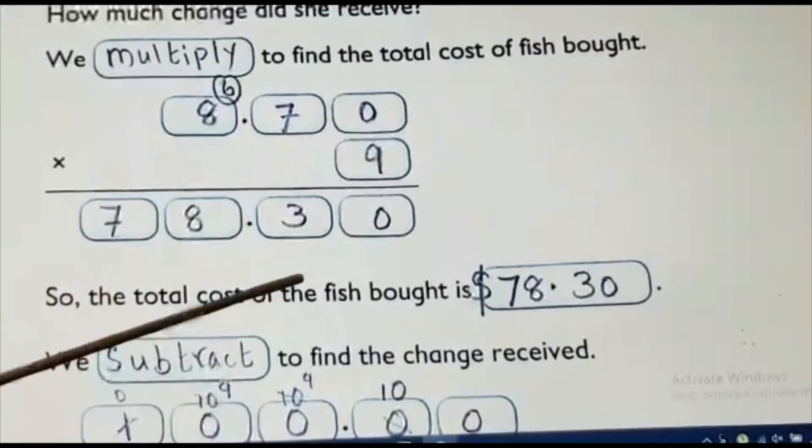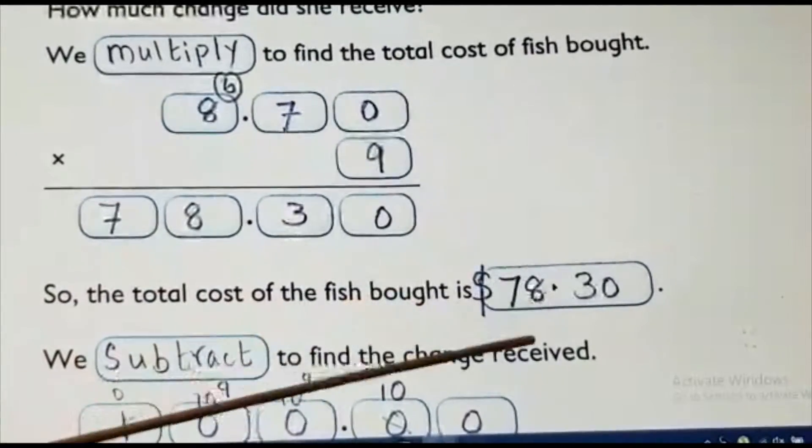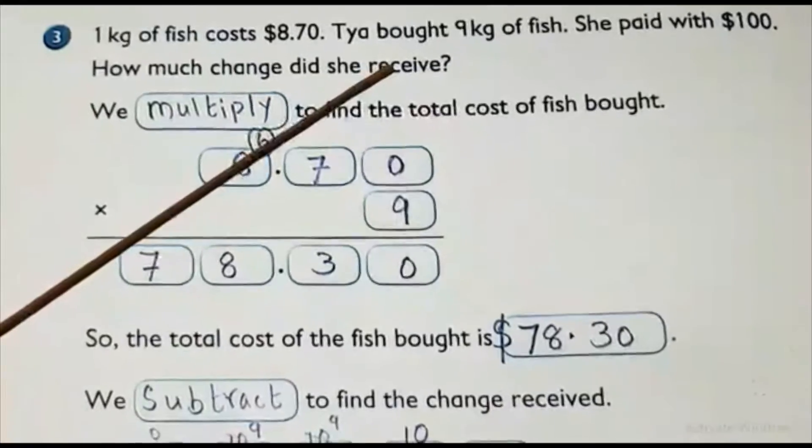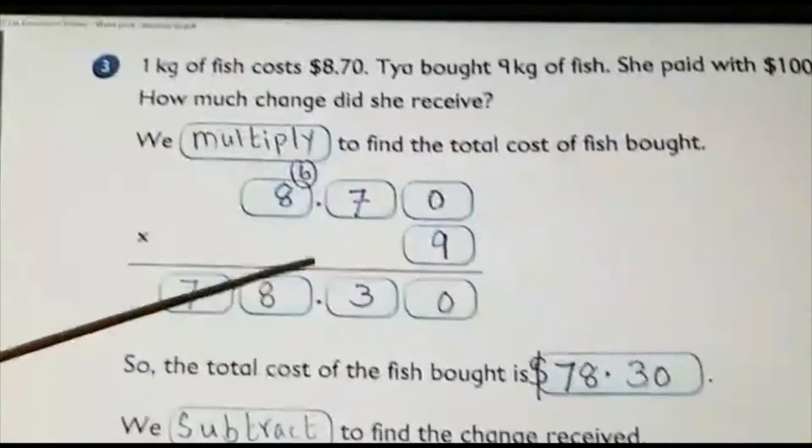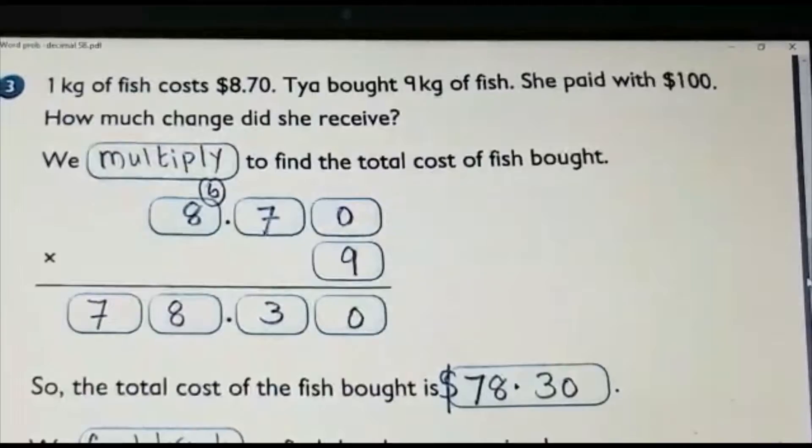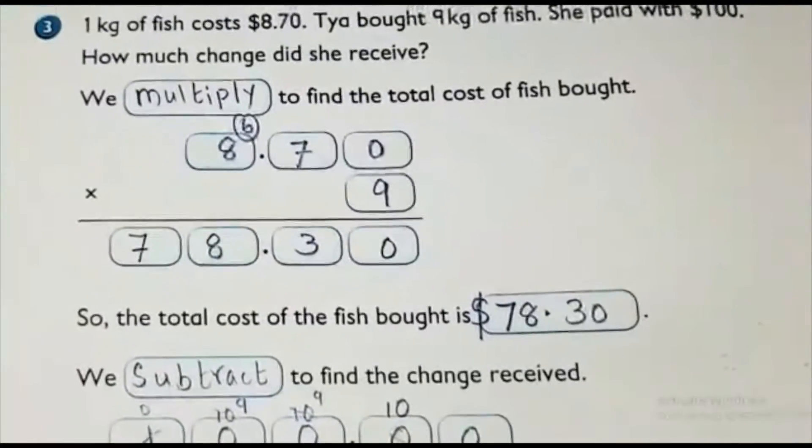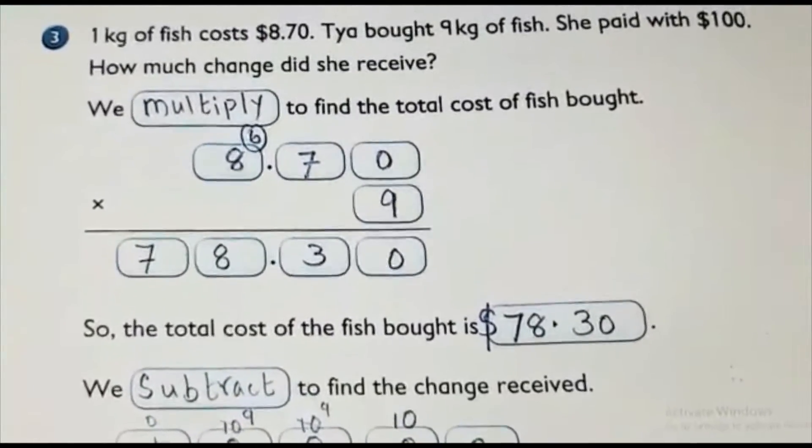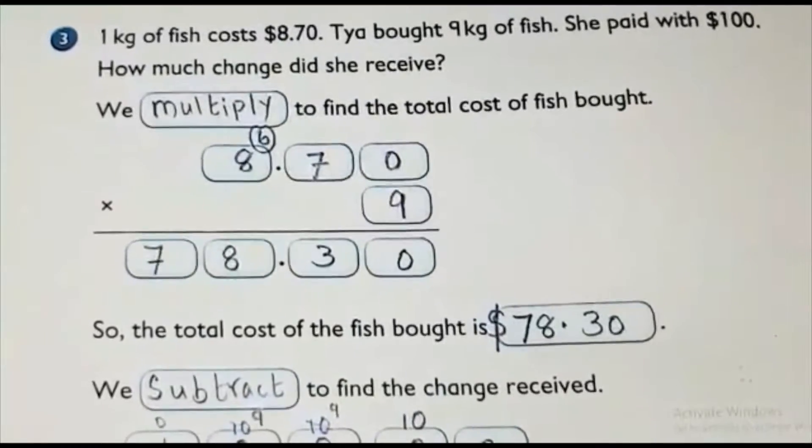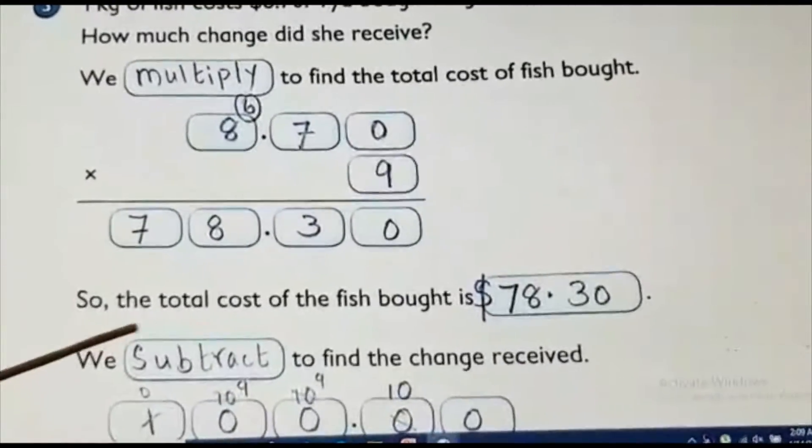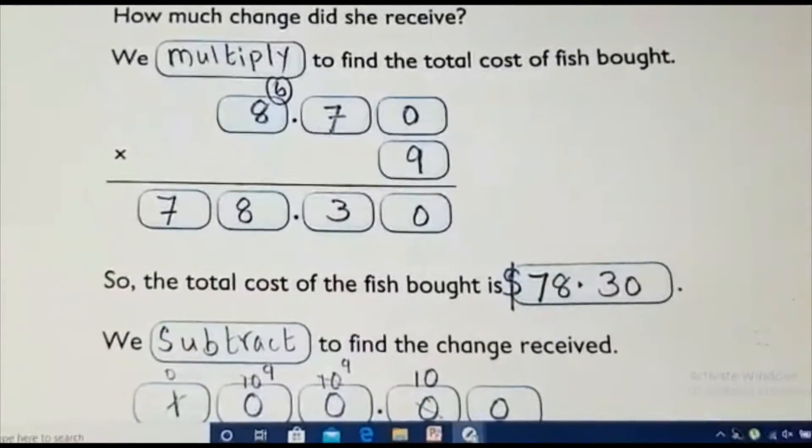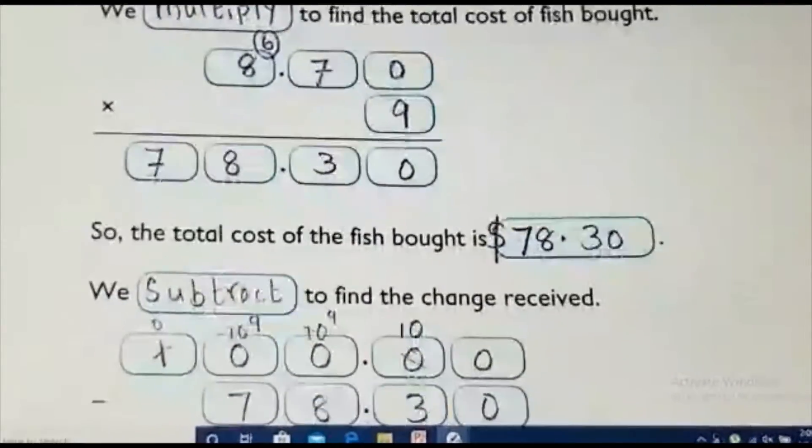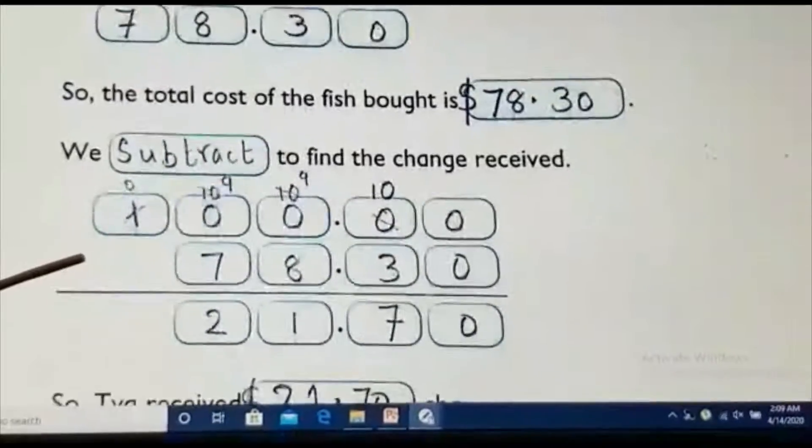We know the total cost of the fish is 78.30. But, how much she paid? 100 dollars. What we should do? Suppose anything. Suppose the chocolate is having 1 real. You paid 2 real. How much balance you will get? From 2 real, you need to subtract 1 real. Same thing. The total cost is 78.30. We need to find the balance. That means, we need to subtract. We subtract to find the change received.